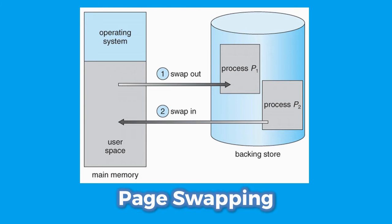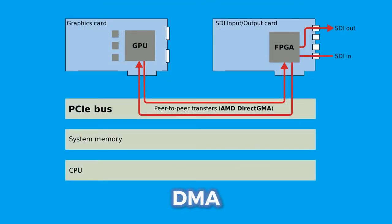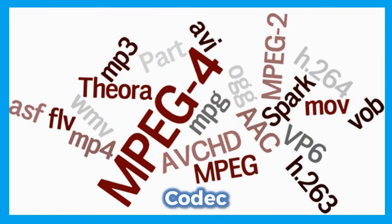Page swapping is also useful since some pages are used by applications only to initialize and are nearly never required later, so swapping helps in this case. However, excessive swapping can lead to a slowdown of the computer. Next we have DMA, or Direct Memory Access, and it is a feature of computer systems that allows hardware subsystems to access main memory independently of the CPU, which reduces CPU overhead.